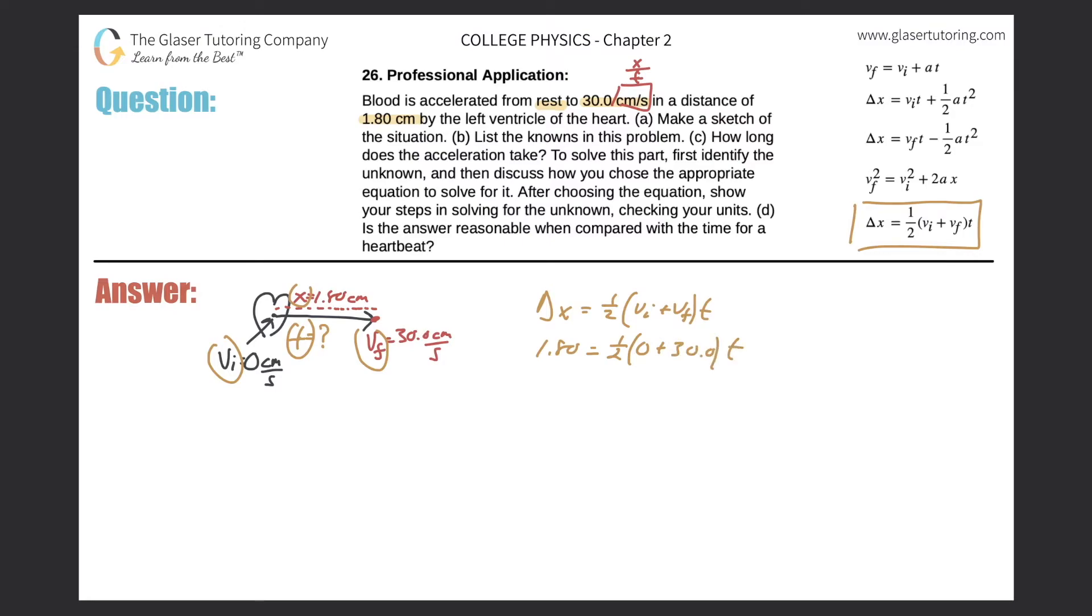And then the time is what we're looking for. So this comes out to 1.80 is equal to, so half of the 30 is going to be 15, so 15.0 times time. Now just divide out the 15.0 on both sides. And now time works out to be, let's see, just take it out and plug it into the calculator. So 1.8 divided by 15.0. And it comes out to the time value of 0.12, and that's in seconds.